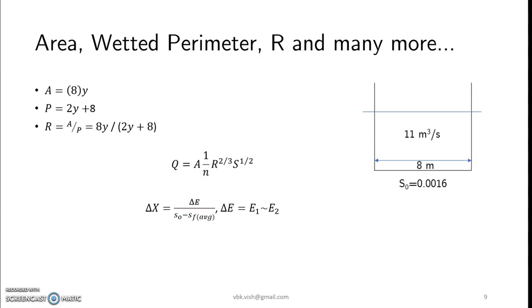And delta x is calculated as delta e by s0 minus s of average, where delta e is the difference between specific energies and s of average would be the average of the Sf1 and Sf2 values.